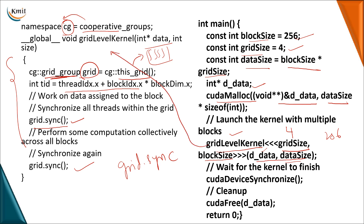After the kernel operations are performed, we use cudaDeviceSynchronize(), which makes the host wait until the GPU has completed its operations. Finally, once the operations are done, the memory allocated to the device data is released using cudaFree. Since the allocation is done by the user, it is the user's responsibility to release the memory.